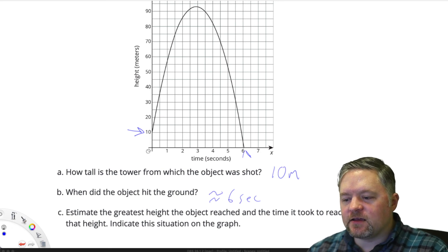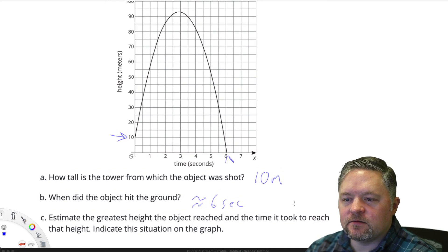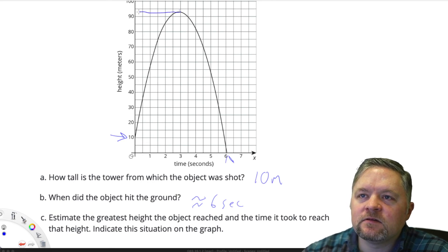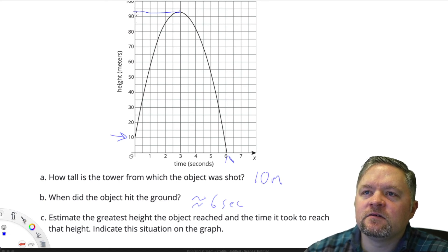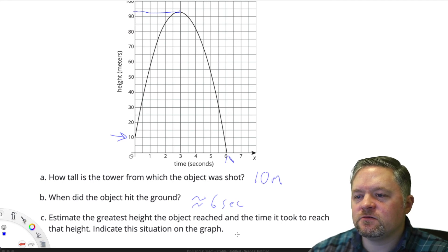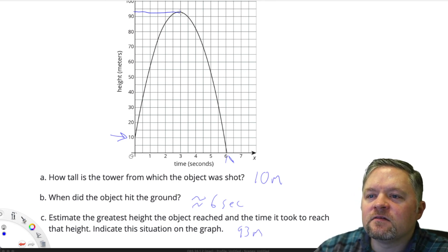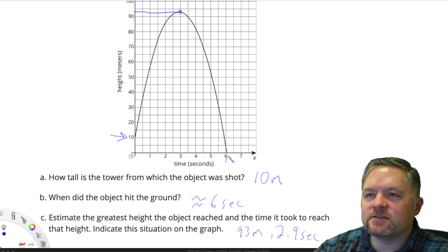Estimate the greatest height the object reached and the time it took to reach that height. Okay, greatest height is here, 93-ish. And how long it took to get there? Looks like it's actually just under 3 seconds. Indicate this situation on the graph. That is right here.